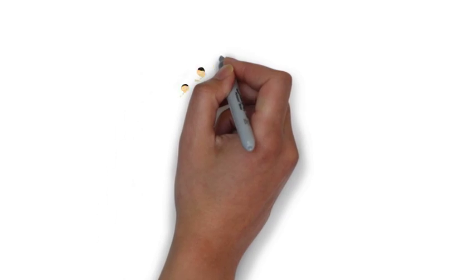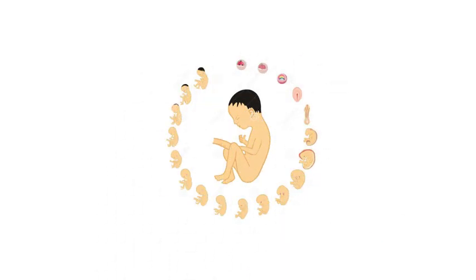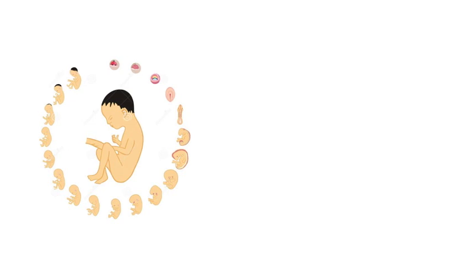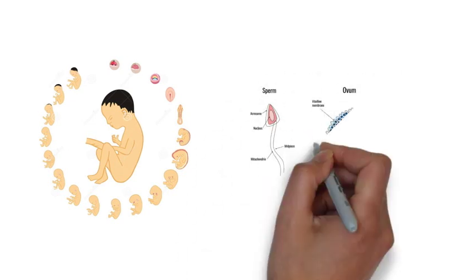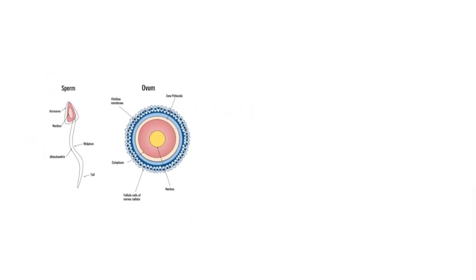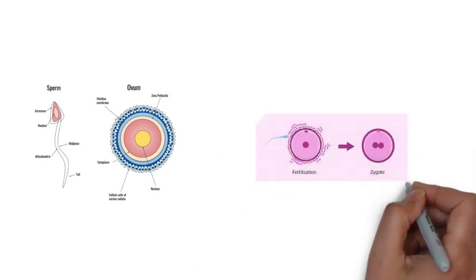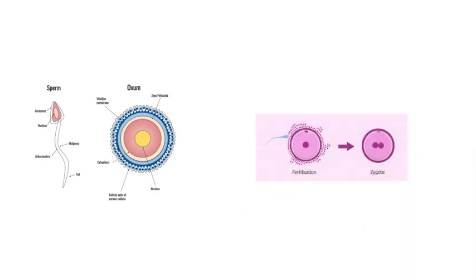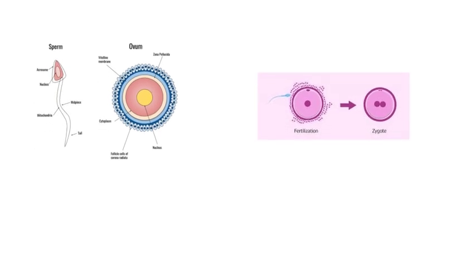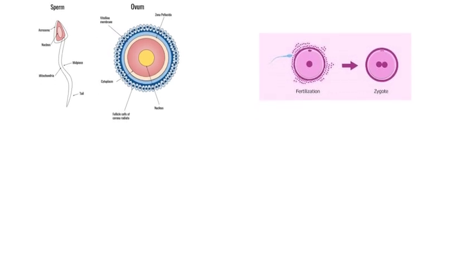An unborn human goes through different distinguishable developmental stages. The first stage starts with the fertilization of the female egg cell by the male sperm. The second stage is the formation of the zygote — a coagulated liquid — which is a unicellular organism that develops into a multicellular organism through a repetitive cell division process.